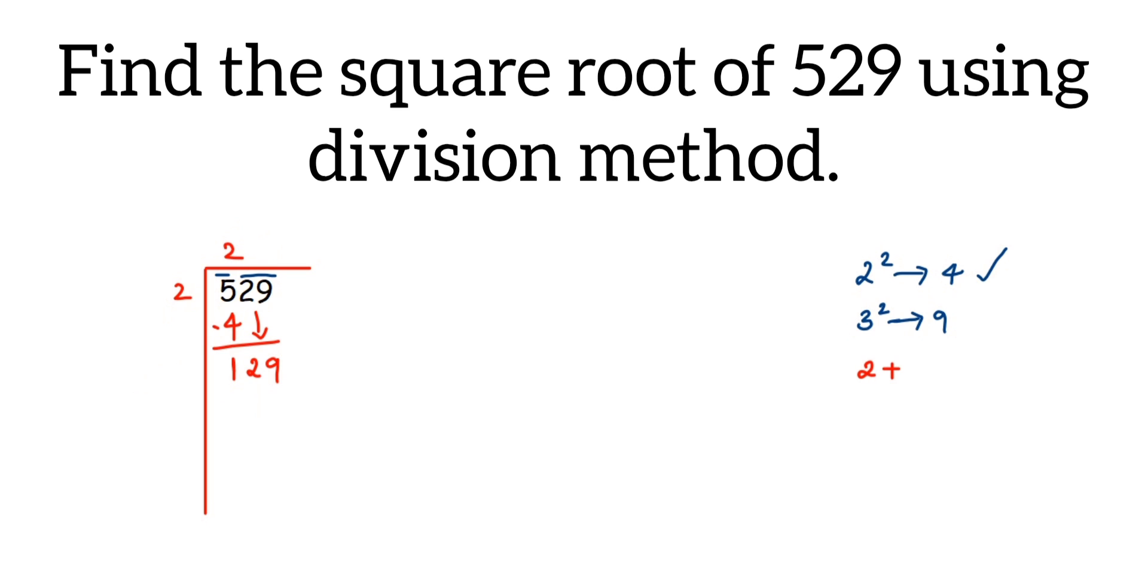So 2 plus 2 is 4. So we will write 4 but along with 4 we have to write one more digit. Now this digit should be same as the digit in the quotient. So whatever digit I am taking here, it will also be the next digit in the quotient. And when you multiply, what number? 4 along with this number.